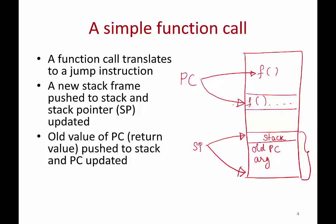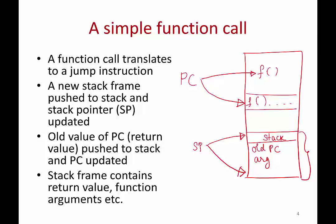Once your function finishes and you have to return, you pop the stack frame. At the beginning of the function you pushed a stack frame; at the end of the function you pop it, and using the old value of the program counter you return back to where you're supposed to. The stack frame for every function call contains things like the return value, the function arguments and so on. The key things to remember: during a function call, the stack pointer is updated, you push a new frame, the program counter is updated, and both these changes are reversed at the end of the function call.